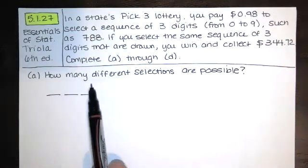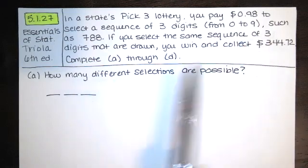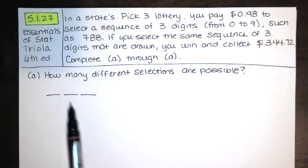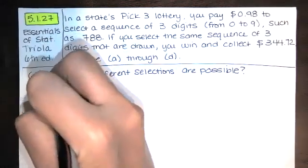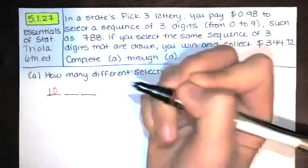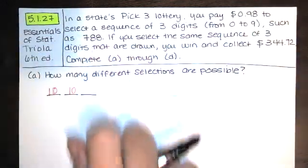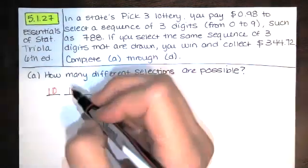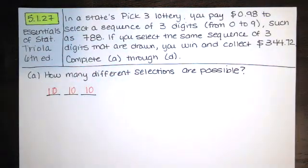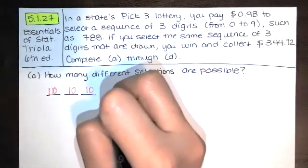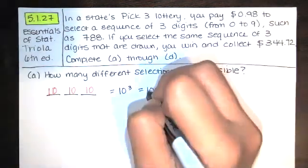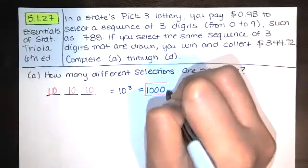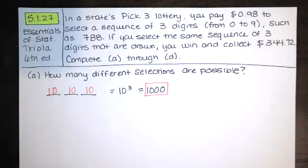That's what this digit is, and the same is true for this digit and this digit. So if you're asking yourself how many different selections are possible, you ask how many different ways can I select this first digit - I can select it 10 ways. And I can also select the second digit 10 ways, because it doesn't matter if we pick the same number twice. And we've got 10 possibilities for that last number. So if we multiply all of those together, we get 10 to the third, which is 1,000. So there are 1,000 different selections that are possible. So that's part A.